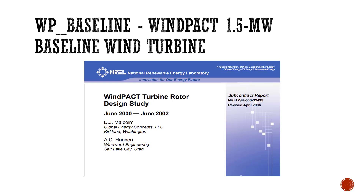Lastly on this list, there is the WP baseline — the WindPACT 1.5 MW baseline wind turbine system. As you can see, it has a capacity of 1.5 MW. A link to the document has been added in the description. So you can find the different technical documents for the seven different types of wind turbine models for OpenFast.